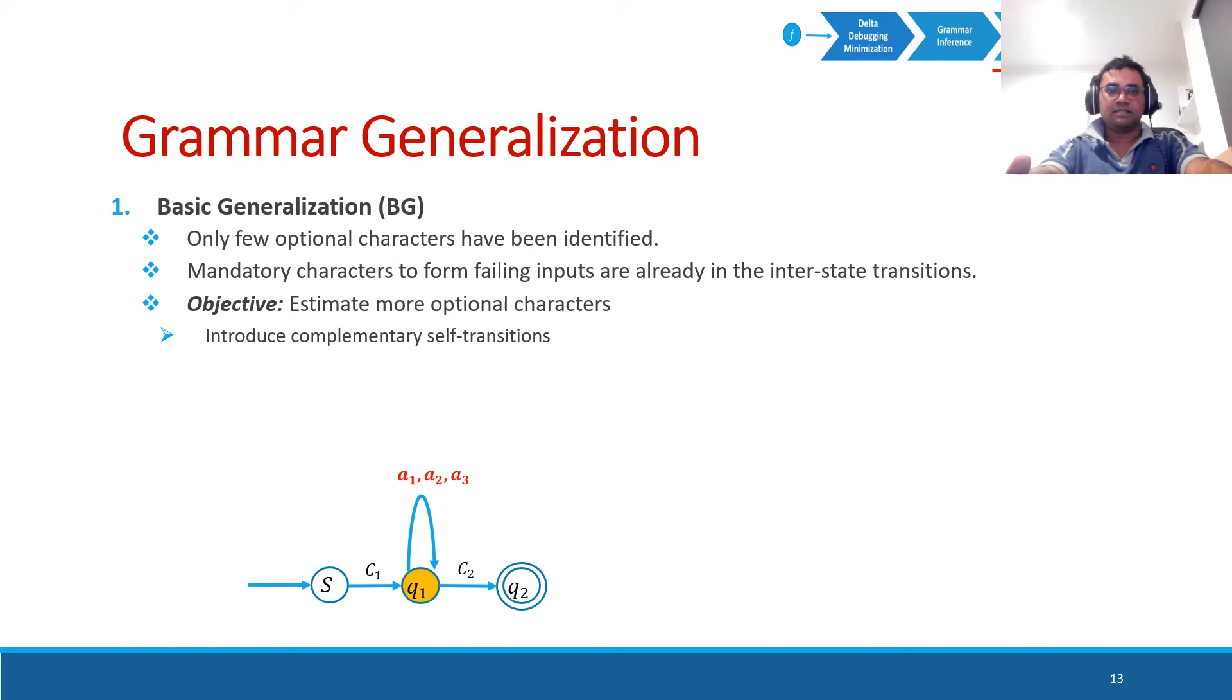I would like to explain this concept. You can see, C2 is in an outgoing transition of Q1. And A1, A2, and A3 are in a self-transition. We convert that self-transition as it can happen under any character other than C2. That means, any character that is not used by any of the outgoing transitions of the state. So this is our complementary self-transition. Under that, we can have more optional characters than previous.